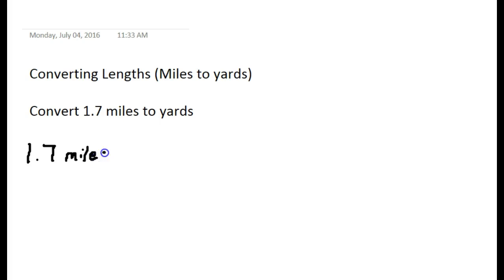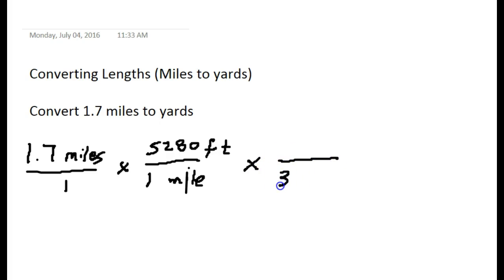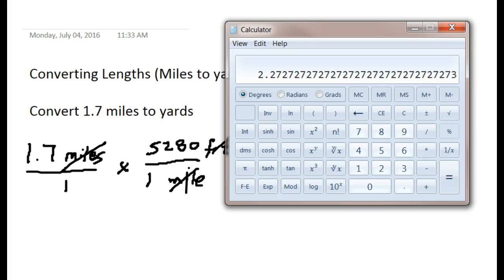I multiply 1.7 miles over one by a fraction with one mile on the bottom and 5,280 feet on top — that converts miles to feet. Then I multiply again by a fraction with 3 feet on the bottom and one yard on top. Now I've canceled out the miles and the feet, leaving yards as my final unit.